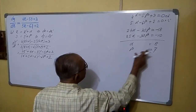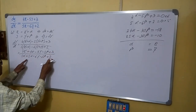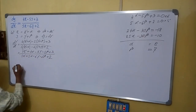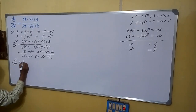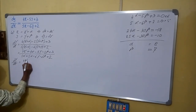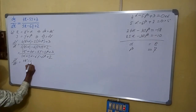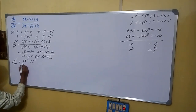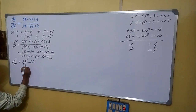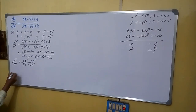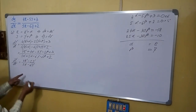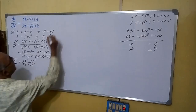So if we put alpha equals 8 and beta equals 7, the constant terms become 0. Then the equation becomes dy dash by dx dash equals to 4x dash minus 5y dash divided by 5x dash minus 6y dash. This is now a homogeneous equation.